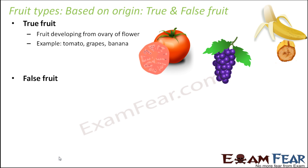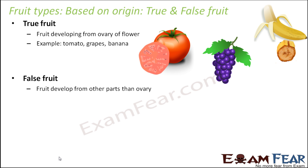When I talk about false fruits, they are fruits which develop from parts other than the ovary. It can be derived from the ovary plus some other part of the plant, or it can be developed completely from other parts of the plant. Examples of false fruits are apple and pear.